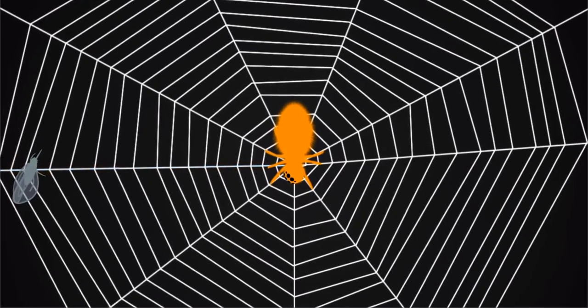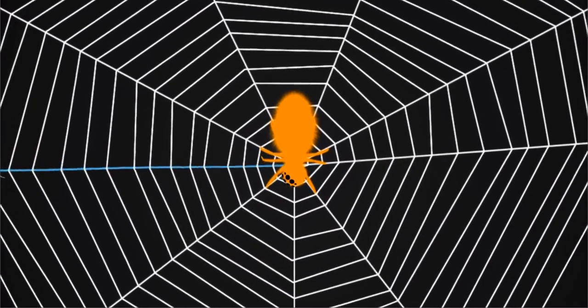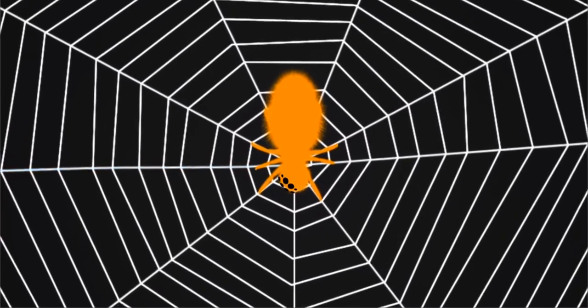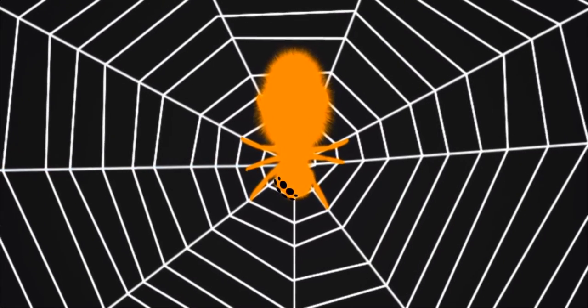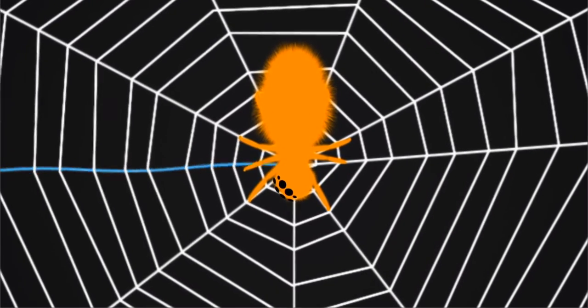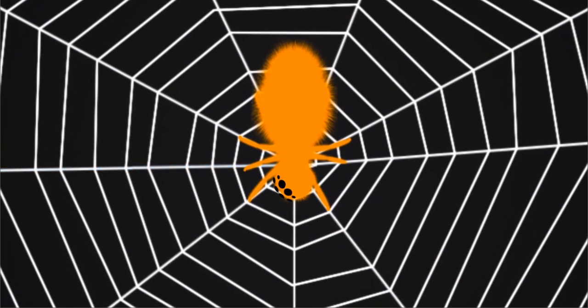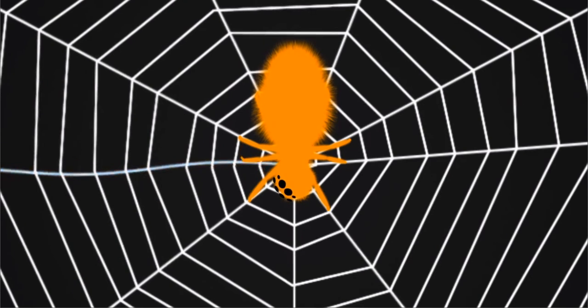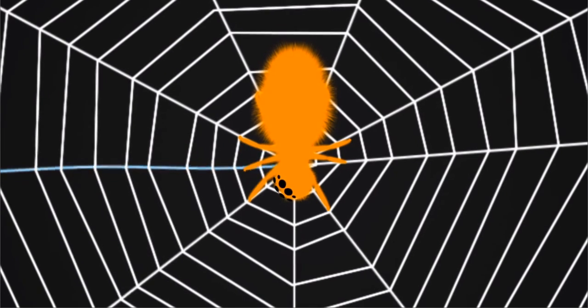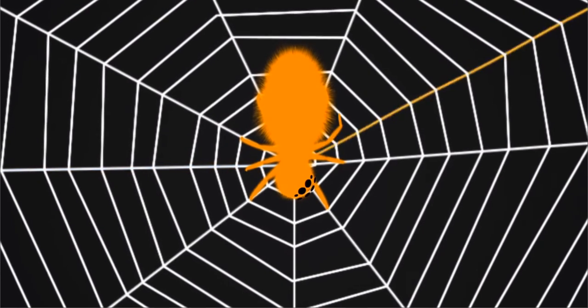By plucking a thread and reading the nature of the vibrations that come back, the spider can tell the difference between a tasty meal and a potential mate.